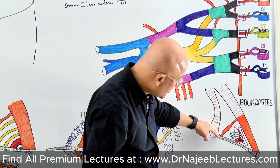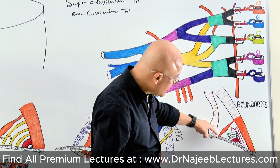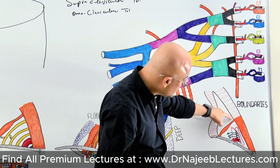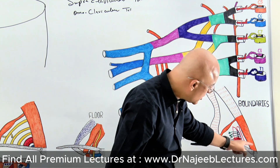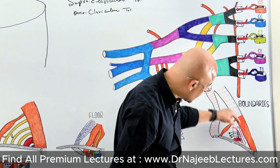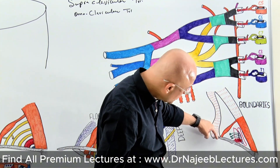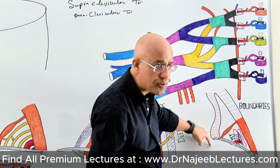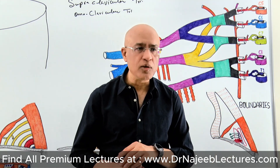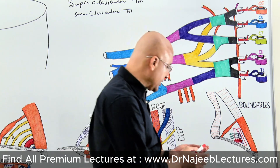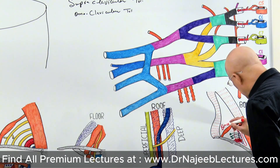This small muscle is obliquely placed. We can see it coming behind the sternocleidomastoid, going beyond and approaching the upper border of the scapula. This is the lower belly, or inferior belly, of the omohyoid.